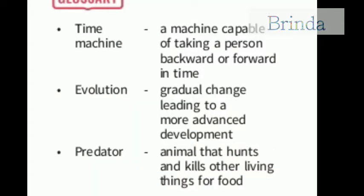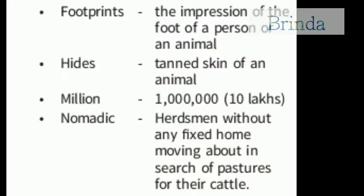Now let us see the glossary. Time machine: a machine capable of taking a person backward or forward in time. Evolution means a gradual change leading to a more advanced development. Hides means the tanned skin of an animal.